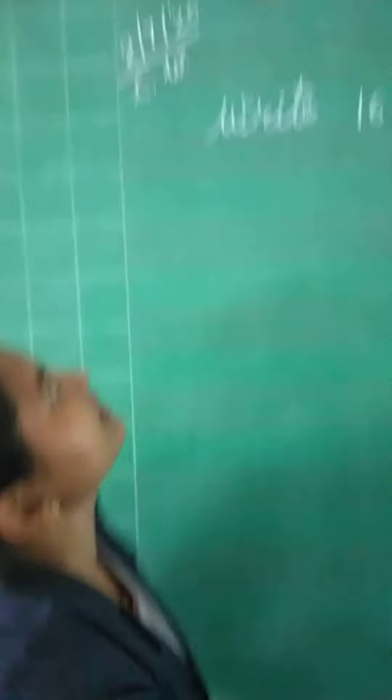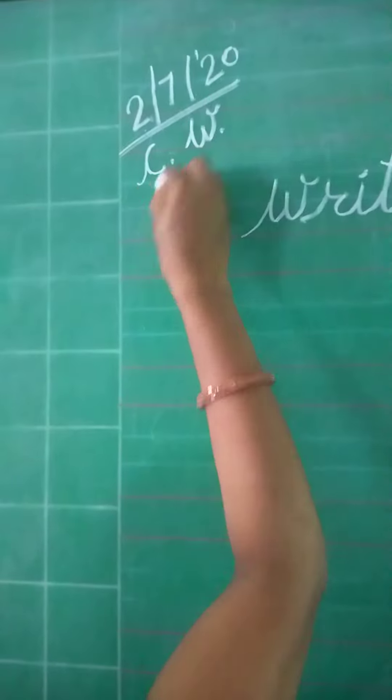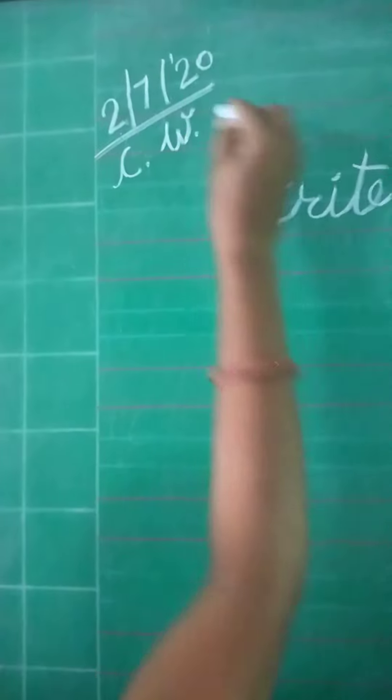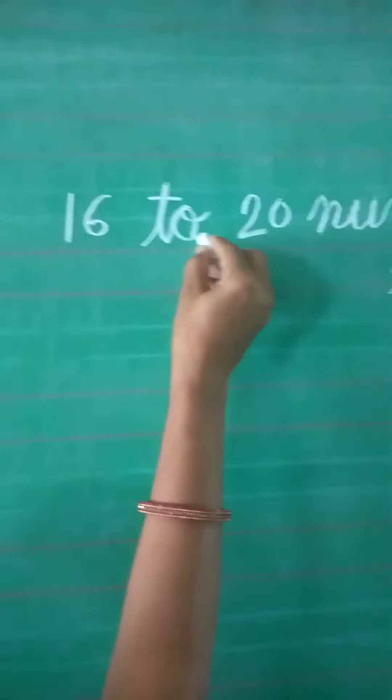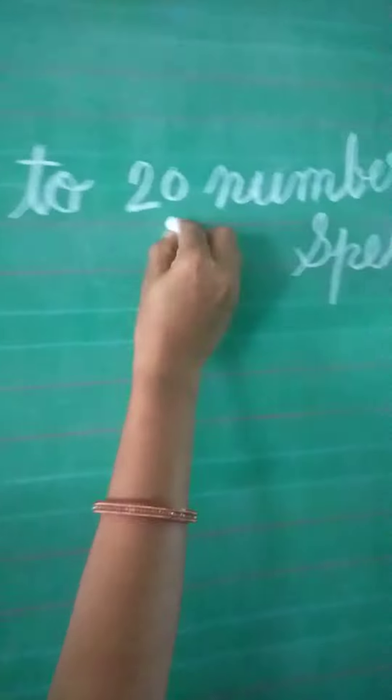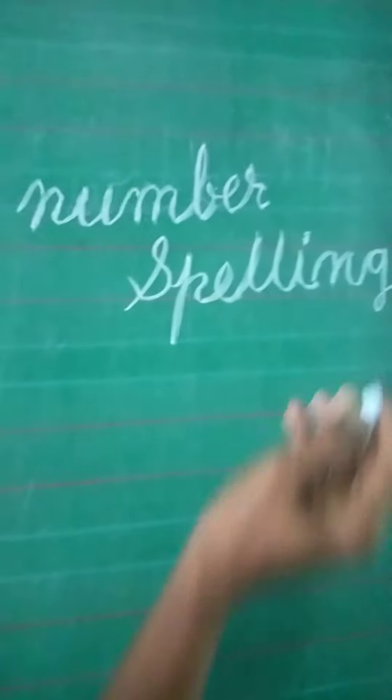First of all, date mention karengi. 2 oblique 7 oblique 20. Write a title. Write 16 to 20 number spelling.